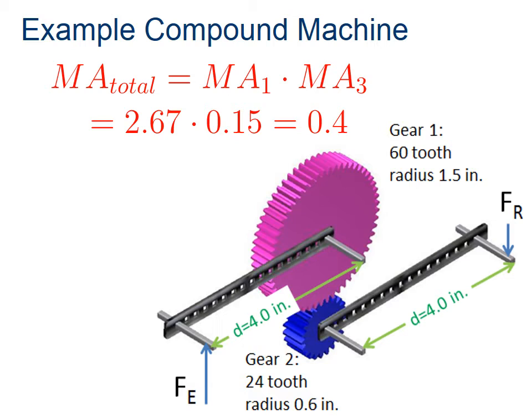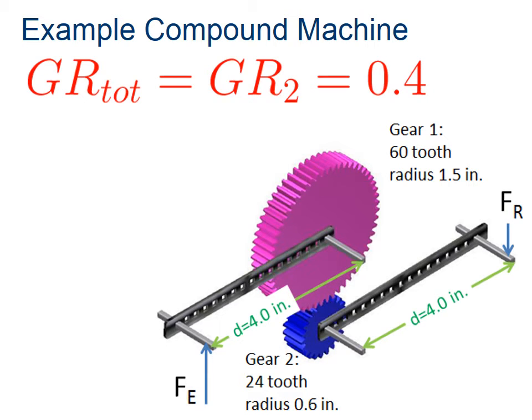So when we put together our mechanical advantage, we have 2.67 times 0.15, and we get 0.4. And then our gear ratio total is just the gear ratio of what we calculated. That's also 0.4.